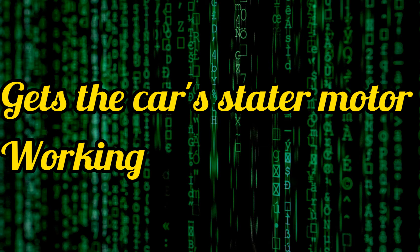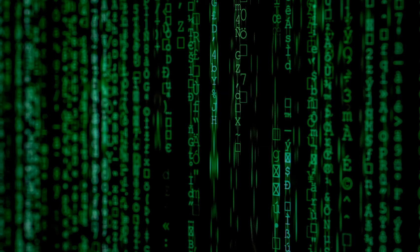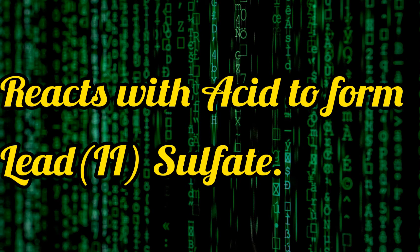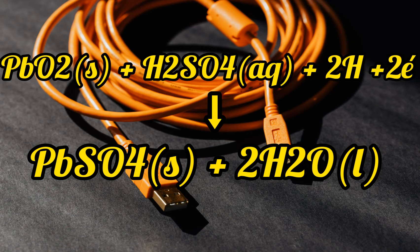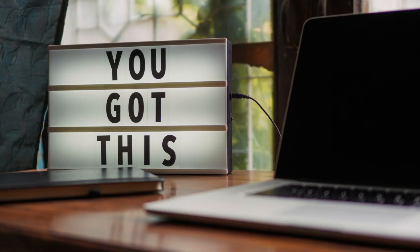Step three: the electrons flow back through the wire to the lead oxide plate. The lead oxide also reacts with the acid to form lead sulfate. Lead oxide (solid) plus sulfuric acid (aqueous solution) plus hydrogen plus two electrons gives lead sulfate (solid) and water.